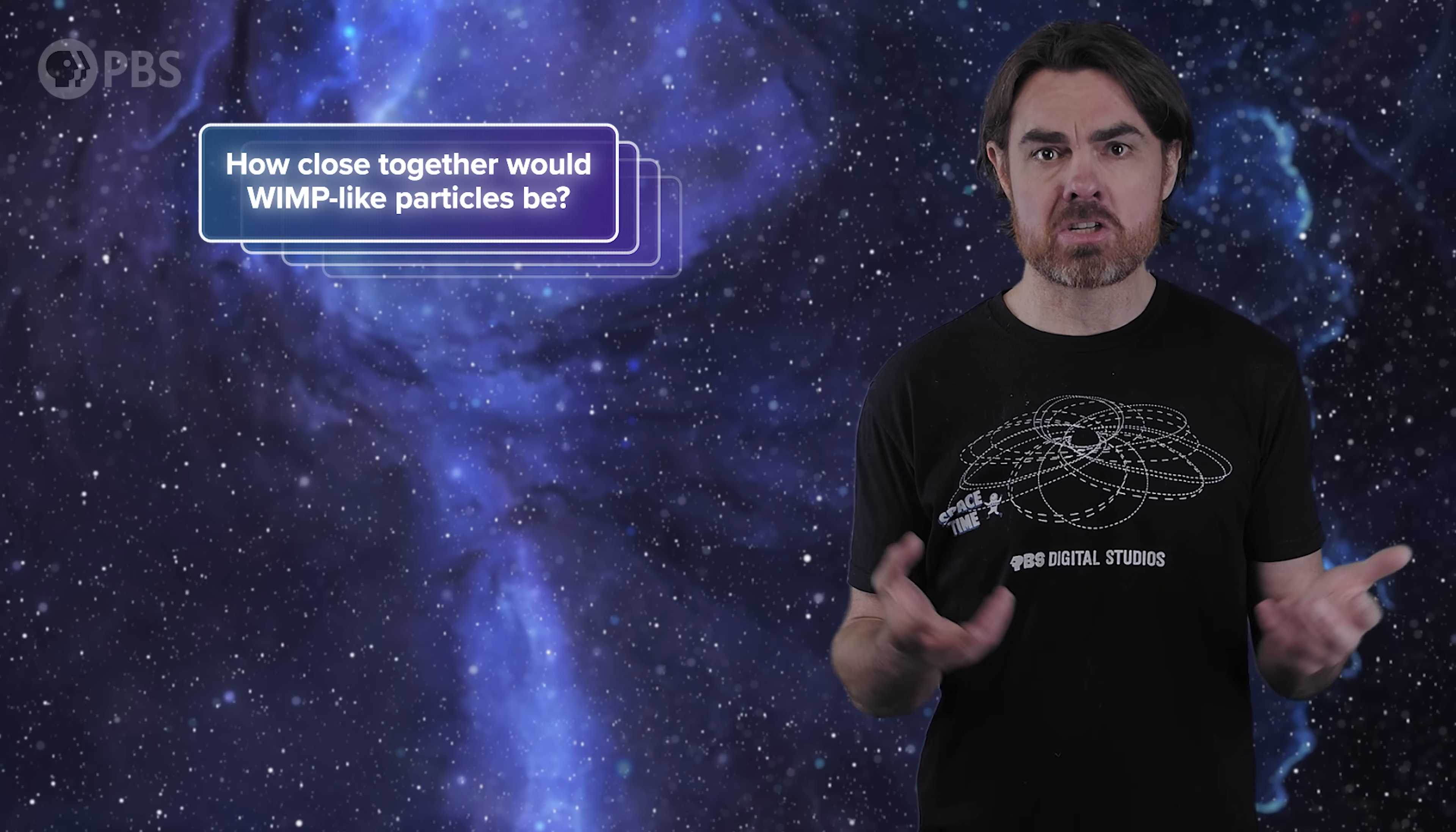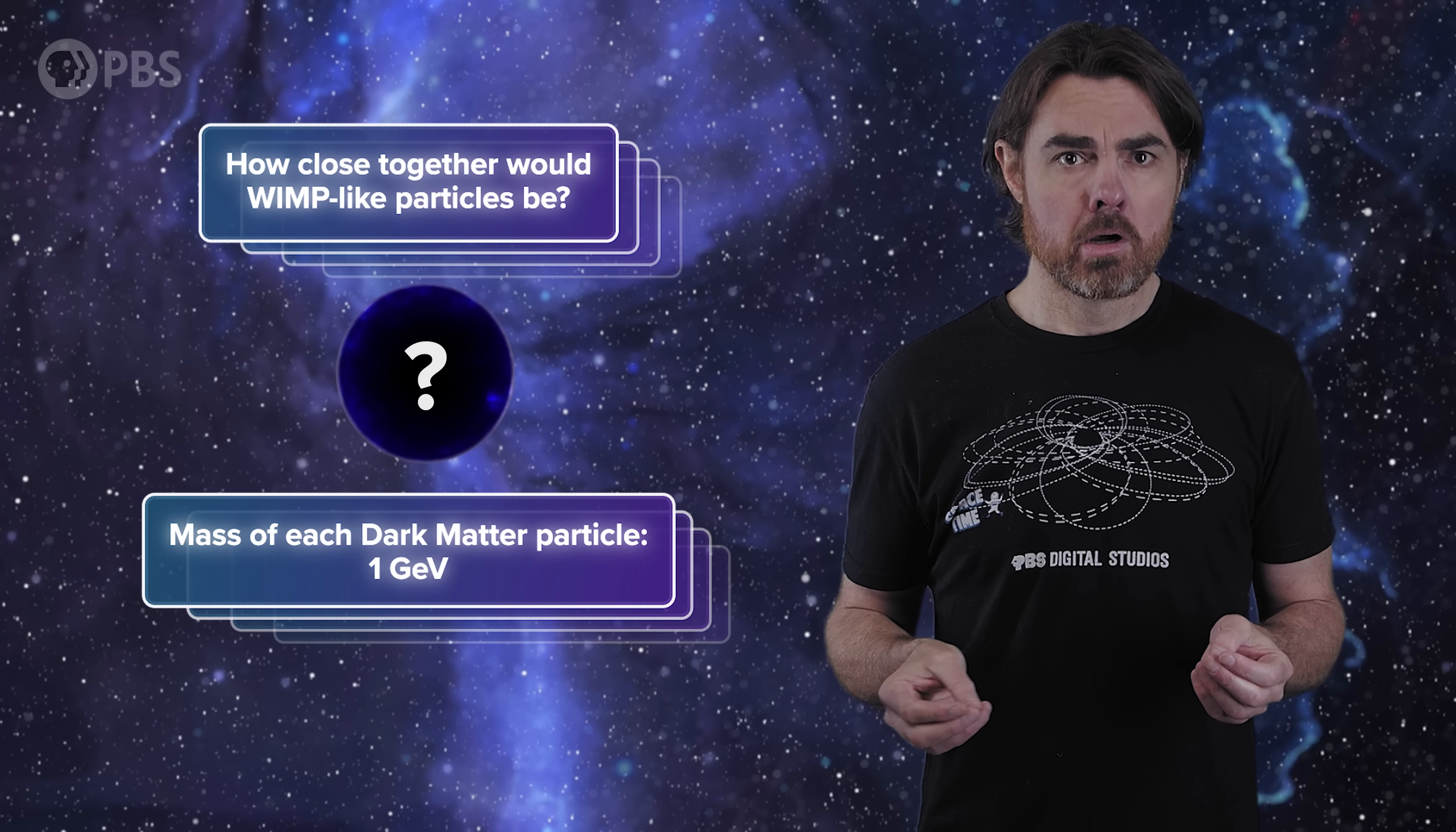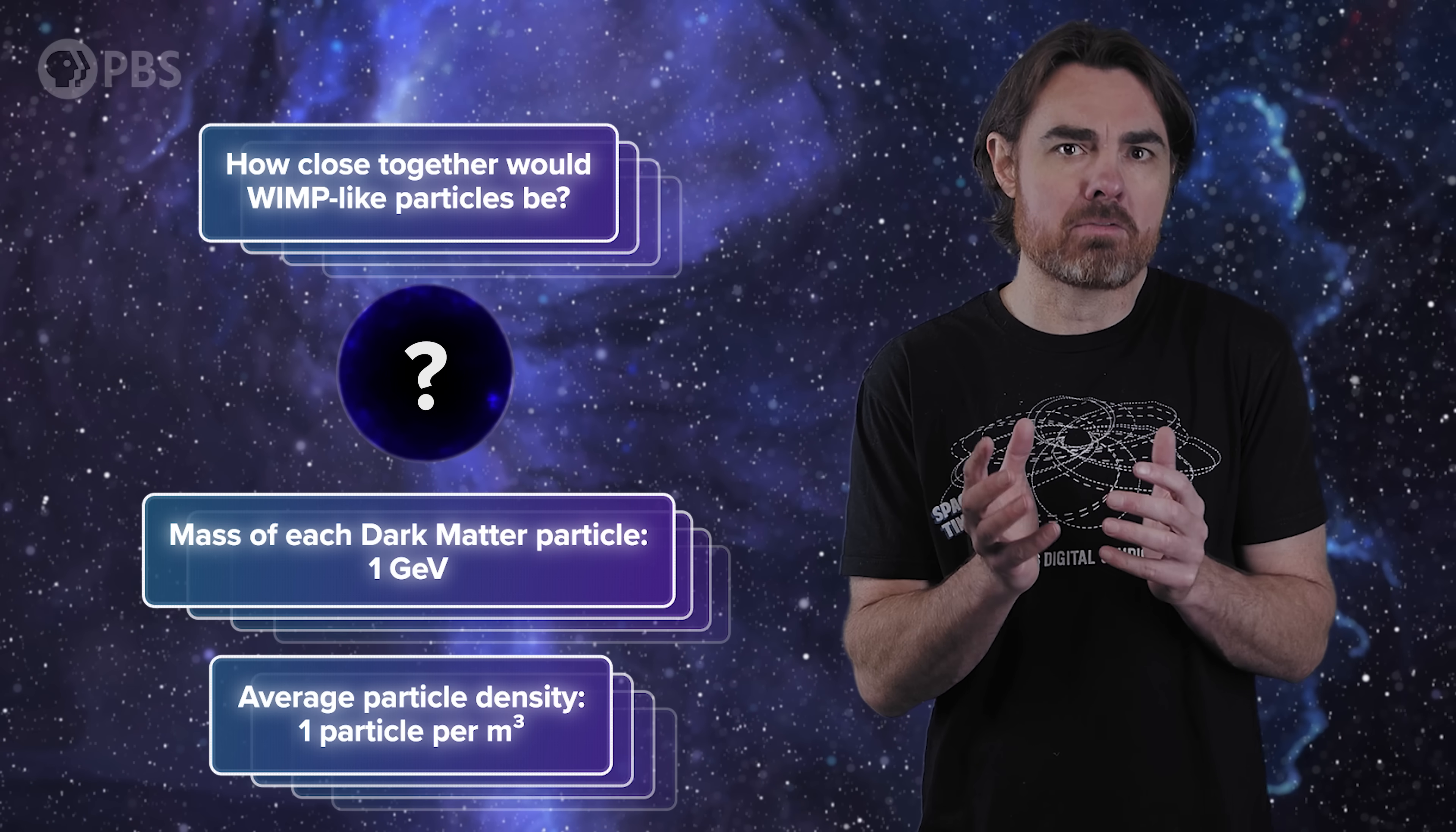To start with, we'll think about WIMP-like dark matter. How close together would those particles be? Let's say the mass of each dark matter particle is around one giga-electron volt, roughly the mass of a proton. We would need about one of these particles per cubic meter on average in order to produce the amount of excess gravity not explained by visible matter. So there would be WIMPs in the room with you right now. But those WIMPs are really far apart from each other compared to their own tiny de Broglie wavelengths. If they only interact by short-range forces, then WIMPs basically never bump into each other. That's what we need for a dark matter particle—something that very rarely interacts even with itself.